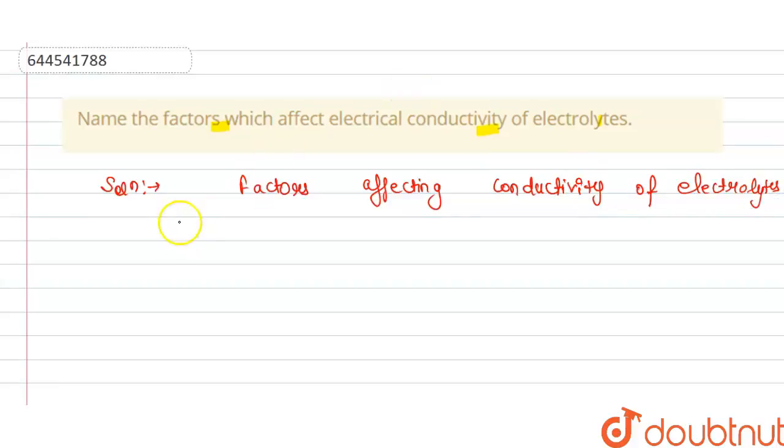So the first factor is nature of electrolyte and second one is concentration of ions in the solution.